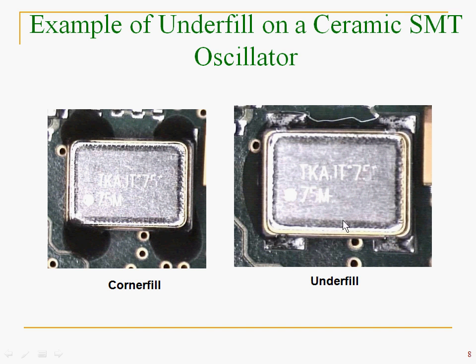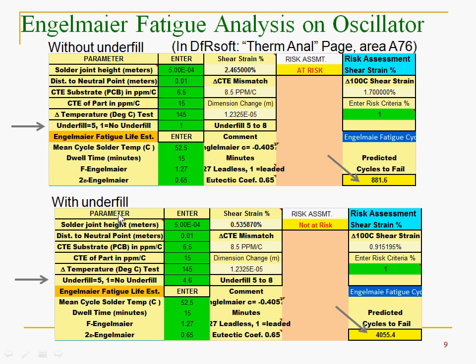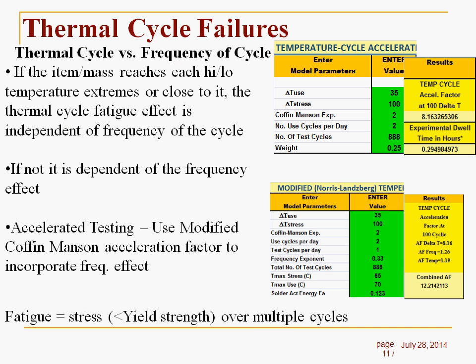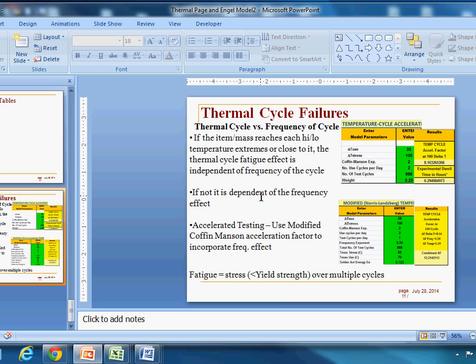DFRSoft covers corner fill versus total underfill, and it's very simple to use — with and without underfill options are clearly presented. DFRSoft also has a very good lookup table for CTEs. Additionally, DFRSoft has an accelerated testing page where you can use the Coffin-Manson expression or the Norris-Lansberg model. There are a number of options for planning accelerated testing.